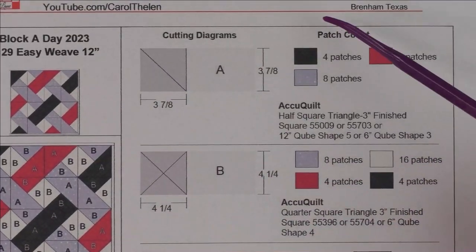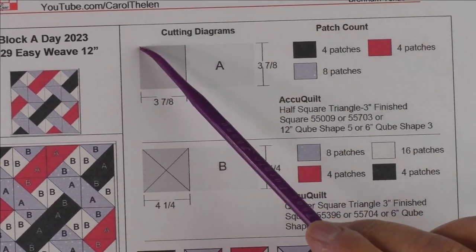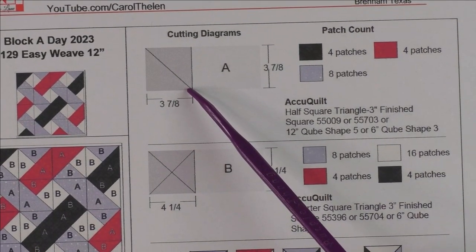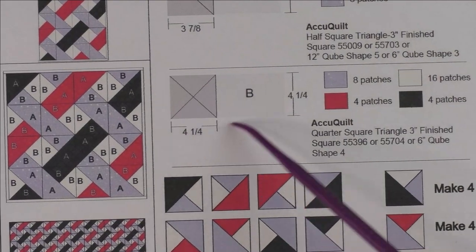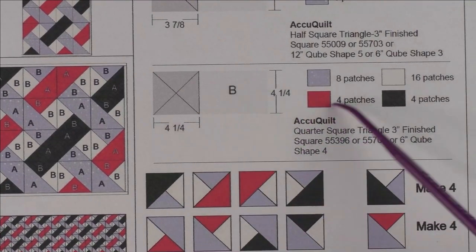Up here we have the cutting diagrams. You're going to cut squares and then cut them in half to make half square triangles, and there are four patches. Then you're going to cut more squares and cut them twice in half to make quarter square triangles.